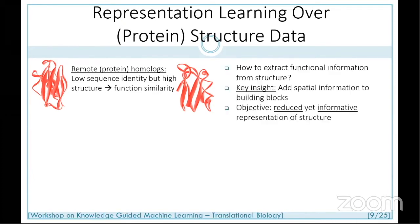In evolutionary terms, function places more constraint on three-dimensional structure than on sequence — sequence changes with much more frequency. So the question becomes: if I'm looking at structure as the form from which to infer function, how do I represent structure? The key insight was that I need to add spatial information to the building blocks. My idea of motifs needs to change to consider three-dimensional information, but we need succinct representations that are informative without being computationally bloated.